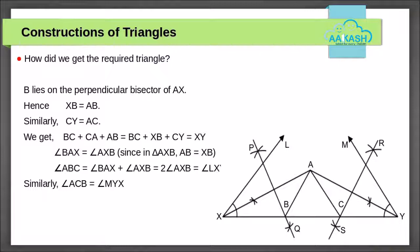Angle BAX is equal to angle AXB because in triangle AXB, AB is equal to XB. Angle ABC is equal to angle BAX plus angle AXB, which equals 2 times angle AXB, which equals angle LXY. Similarly, angle ACB is equal to angle MYX.